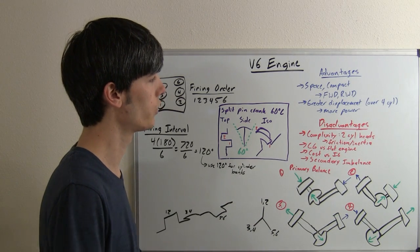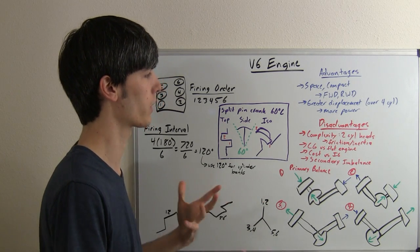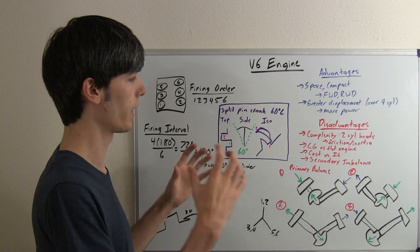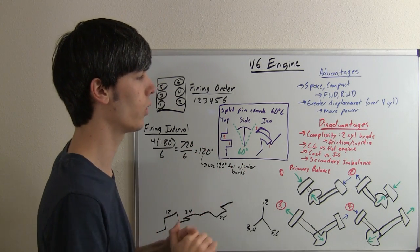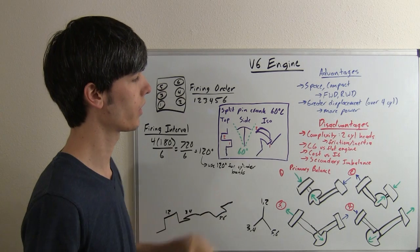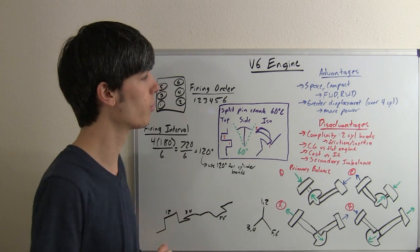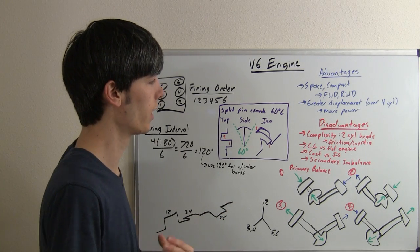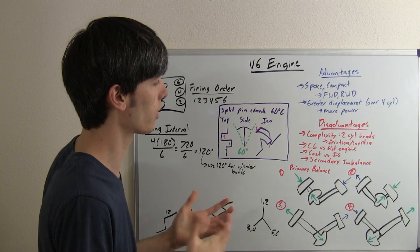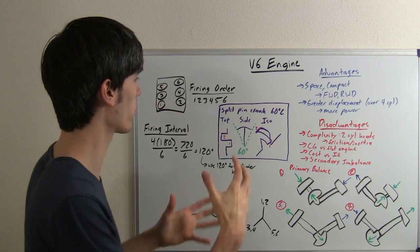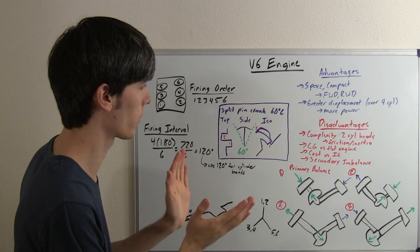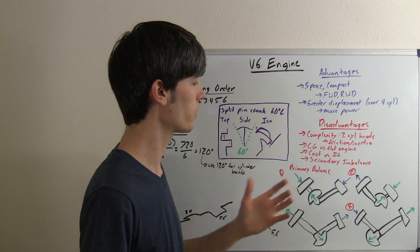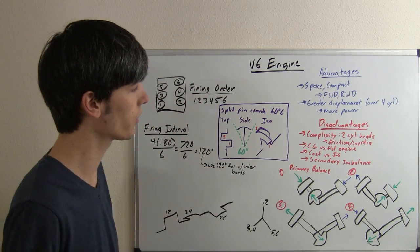Disadvantages: complexity, two cylinder heads, so you've got more friction, wear, and inertia in these two cylinder heads rather than just having one on an inline. Center of gravity is still high in comparison to a flat engine. The cost is a little bit higher than an inline engine. You've got those two valve trains and a bit more difficult engine block.